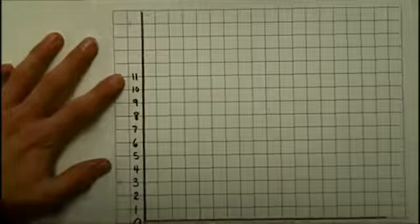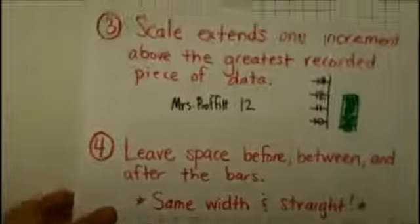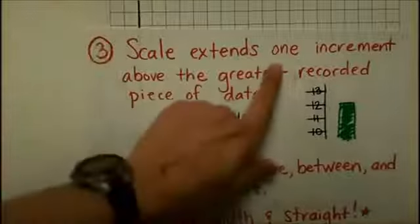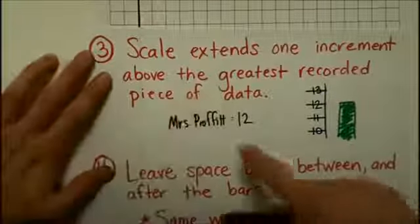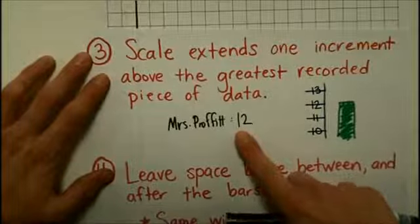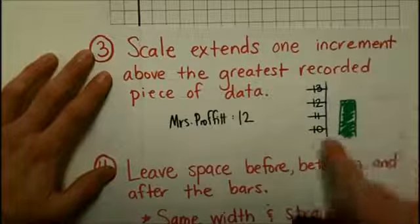Now we need to figure out how far we're going to go on the y-axis scale. Let's look at the next step. Step number 3 says that the scale extends 1 increment above the greatest recorded piece of data. So, since my number of shoes was the greatest, which is 12, I want to go one number past that, which is 13.